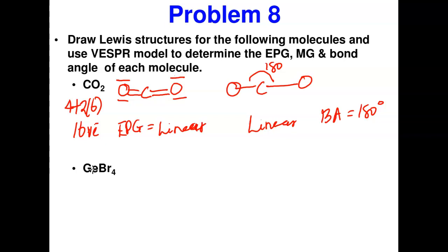For GeBr4: germanium is in group four, giving four electrons, plus four bromine atoms in group seven — four times seven is 28. Twenty-eight plus four gives 32 valence electrons.